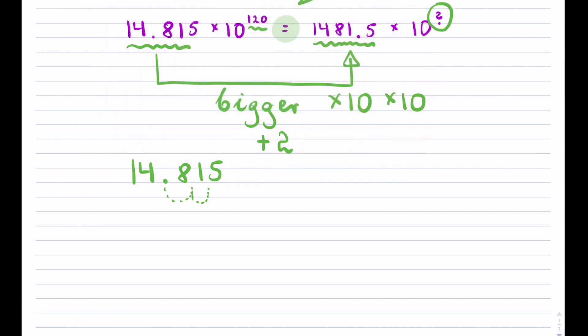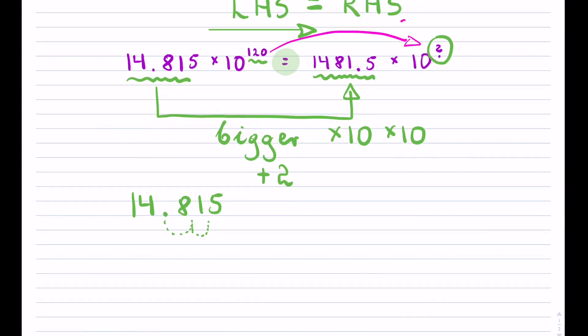So what you have to do when this happens, if you notice that it gets bigger by 2, to counterbalance so that they're still equal, your exponent in this case must get smaller by the same amount, smaller by 2, which is smaller by 2, meaning division by 10 two times.